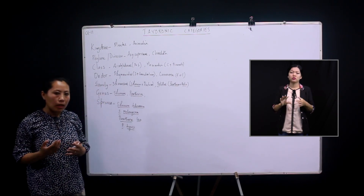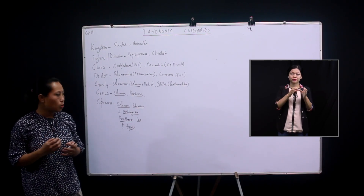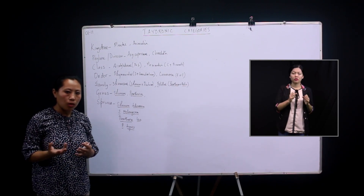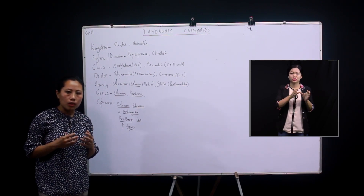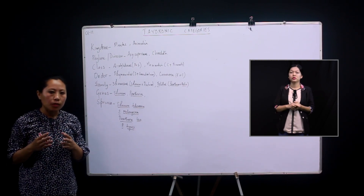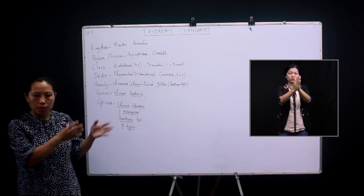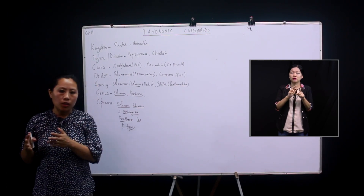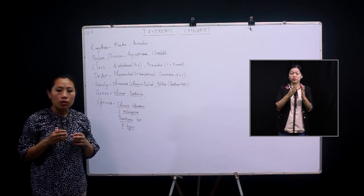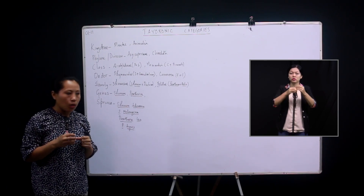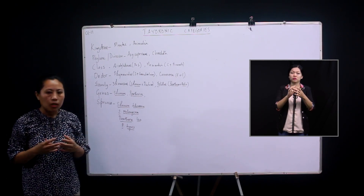In continuation with that, let's see in detail what are the taxonomic categories — the different categories used during the classification of a plant, an animal, or even a microbe. Classification is like arranging books in a library, grouping organisms based on resemblances and differences. It consists of a hierarchy of steps, and since these hierarchies are part of the overall taxonomic classification, they are known as taxonomic categories.